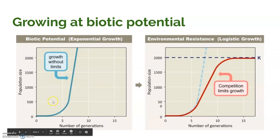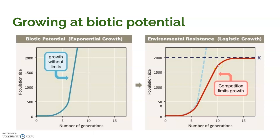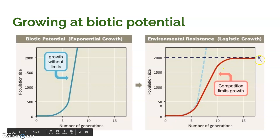Biotic potential is represented by an exponential growth curve, so it looks just like a J. Whereas once competition begins to limit that growth, you see a logistic curve. Once that population experiences any sort of environmental resistance — whether it's the amount of food, water, space, or mates — there's some point where that environment can't sustain that population anymore. That's when it hits carrying capacity, and that's where we see a logistic or S-shaped curve.